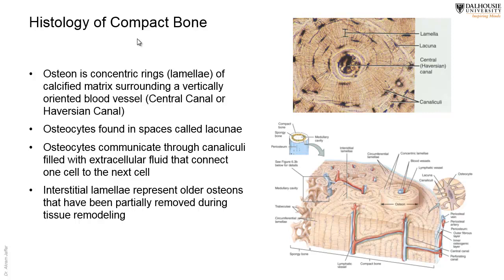Osteocytes cannot lay down matrix except on a limited basis; they are imprisoned inside the matrix but connected to other osteocytes through canaliculi. Between the osteons, bone that is not arranged in the form of osteons occupies the spaces called interstitial lamellae. Interstitial lamellae represent remnants of old osteons, since bone is continuously replacing and renovating itself.